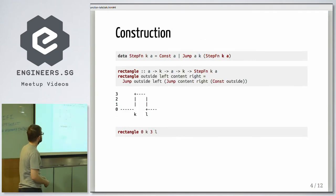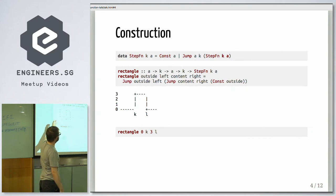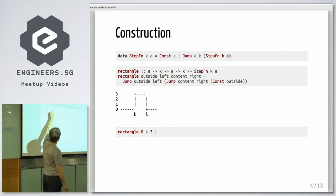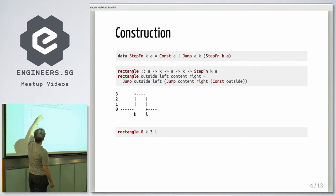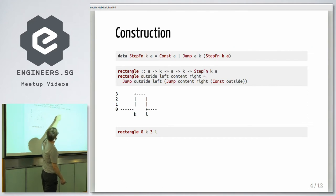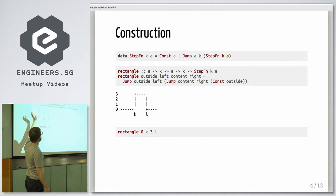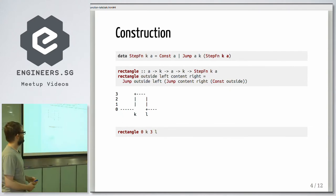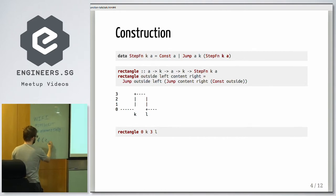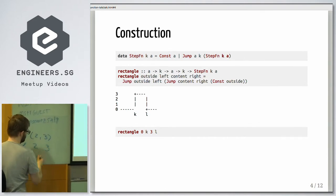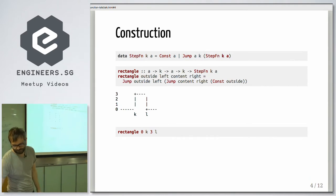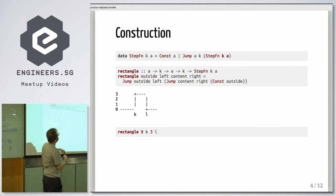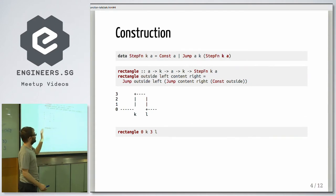Here are some examples of how we could construct it. For example, if you want to construct a rectangle, we have basically two jump points: one is the left part of the rectangle and the right part. To the left of the rectangle we have the values outside the rectangle, then we have what's in the rectangle, and on the right we have the outside again. What you see is that the whole data structure is just like a linked list. The Const is basically like the end of a linked list, and the Jump is basically one more step in the linked list.